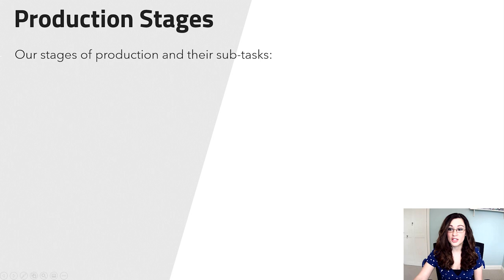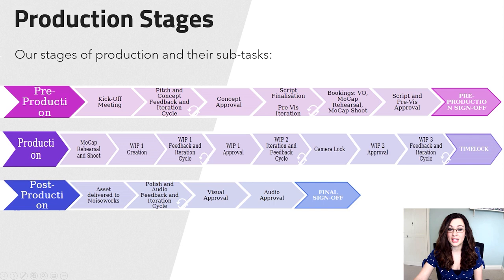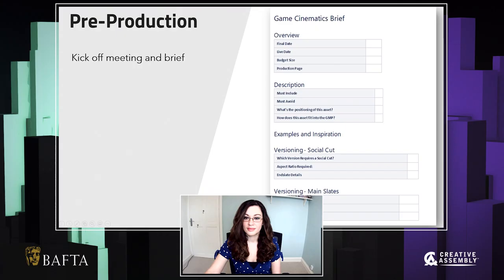When creating a trailer, we have three stages that we need to work through, and these can be defined as pre-production, production and post-production. You can see from this diagram that each stage has a number of different subtasks that we have to complete before we're allowed to move on to the next one.